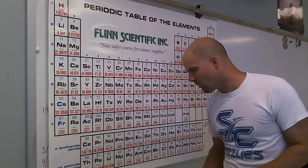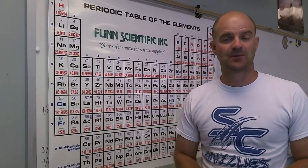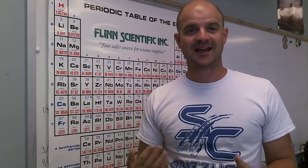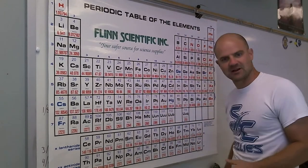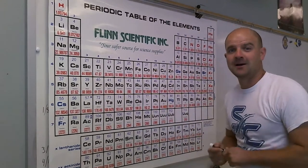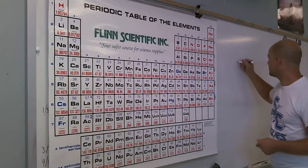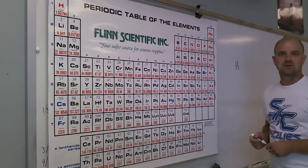So a Bohr model of hydrogen, for example, is the most simple because hydrogen is the lightest, most simple element that we have. Hydrogen symbol H. For a Bohr model, we just put the symbol in the center of the model, so we start off with the letter H.